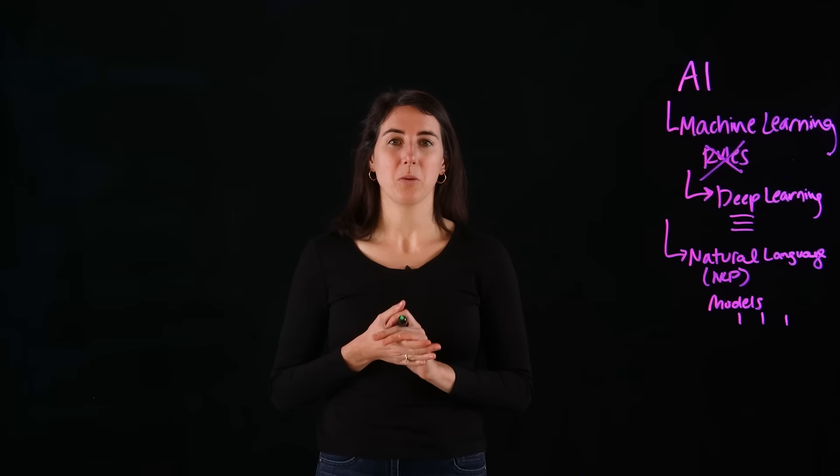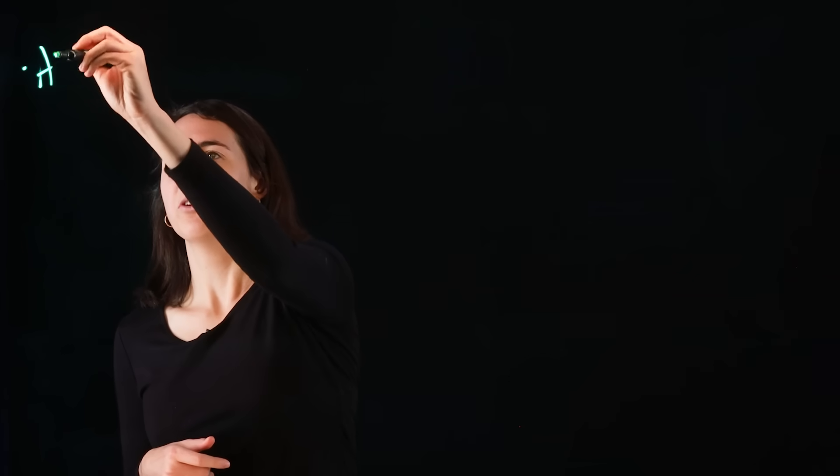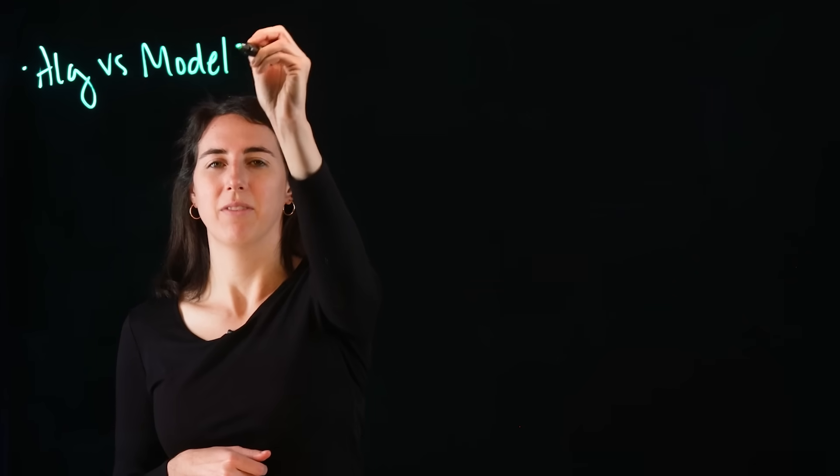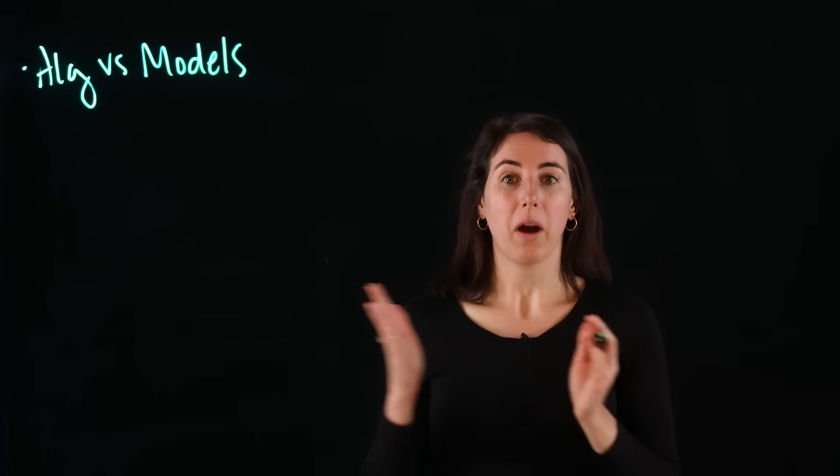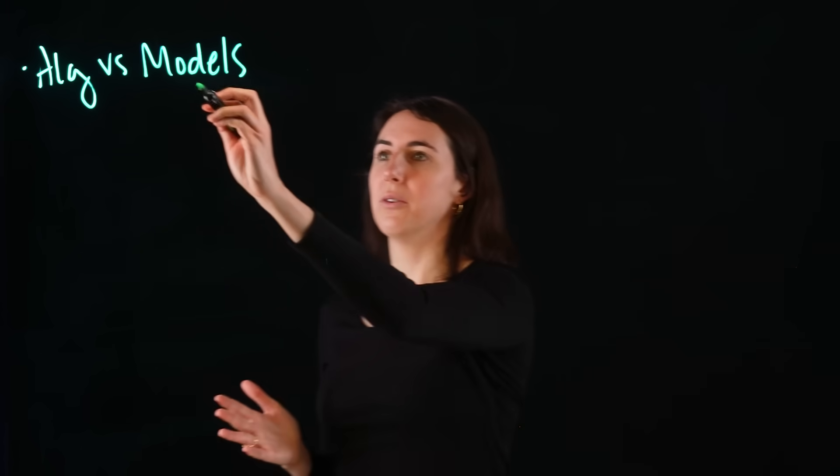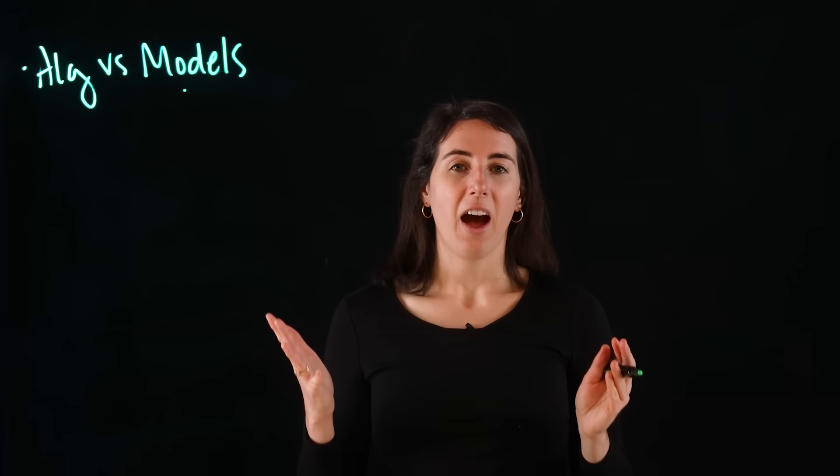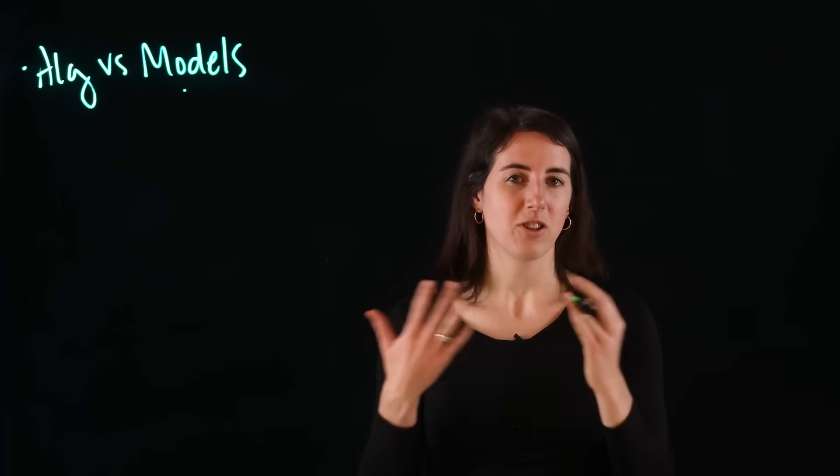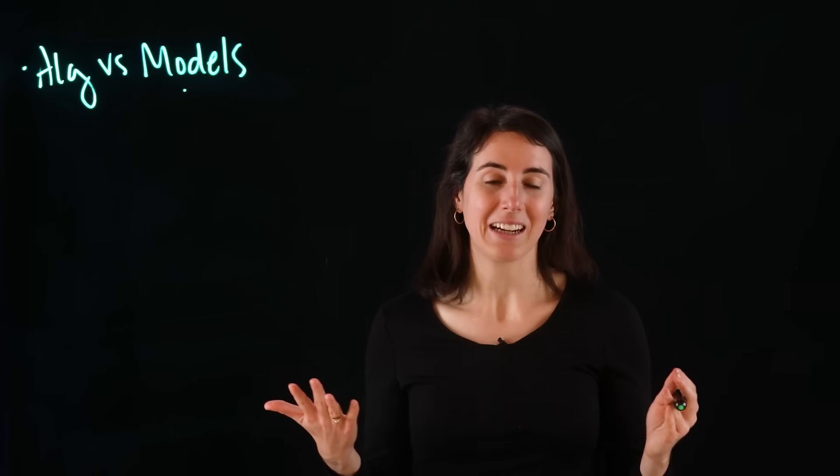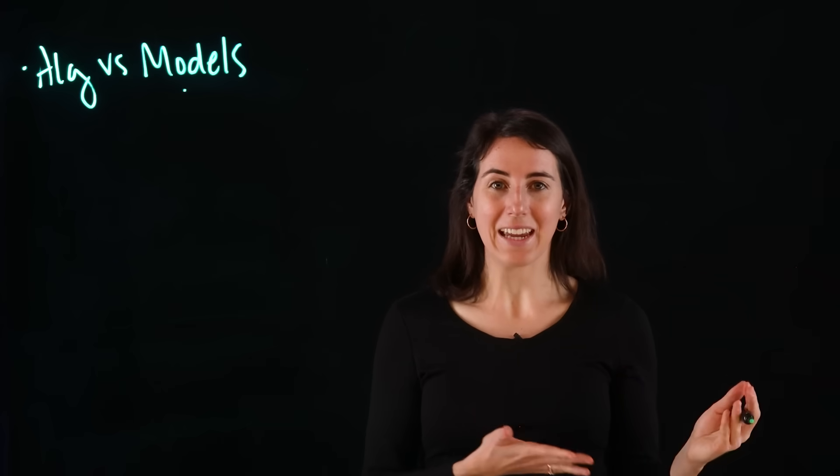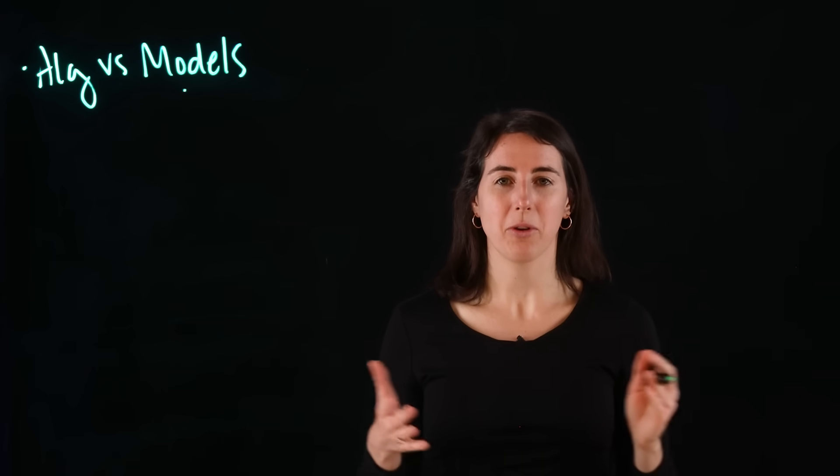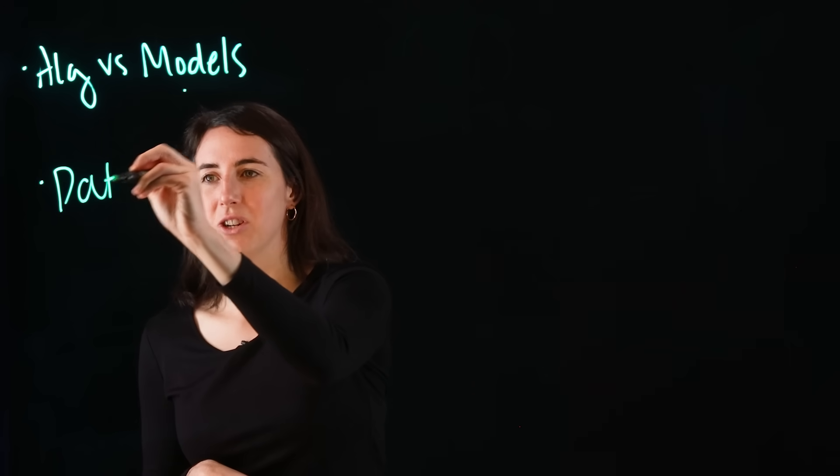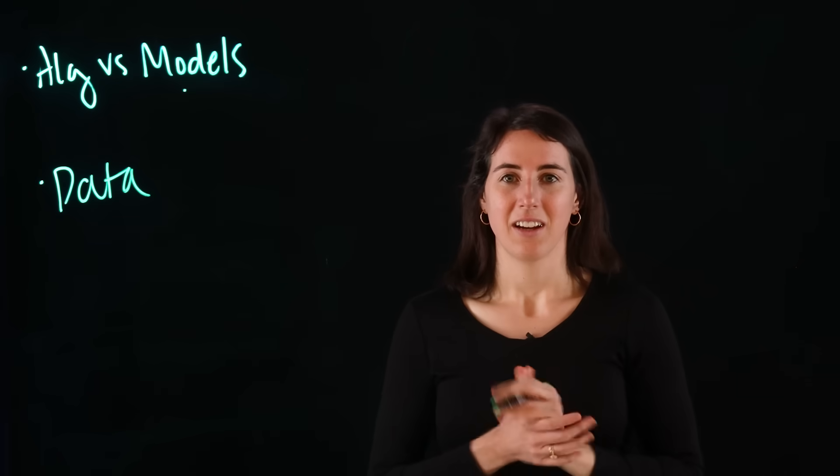Let's go deeper into the building blocks. First, we have algorithms versus models. Algorithms are the recipes, while models are the finished dish. Algorithms are the step-by-step instructions, just like baking a cake. The model is that cake—the trained system created by applying an algorithm to data, which is our second topic.